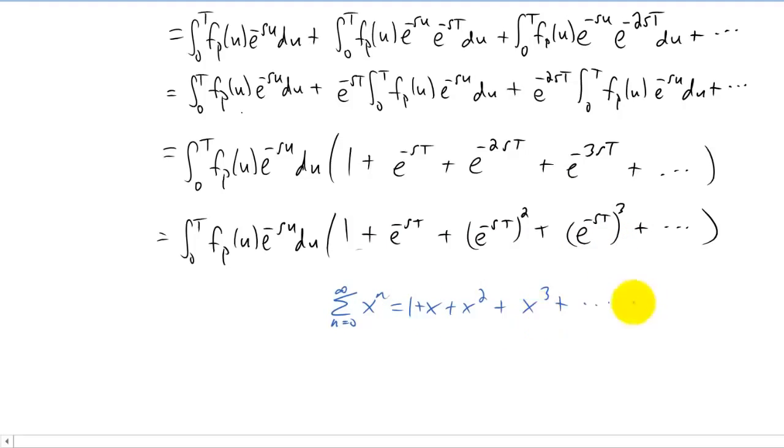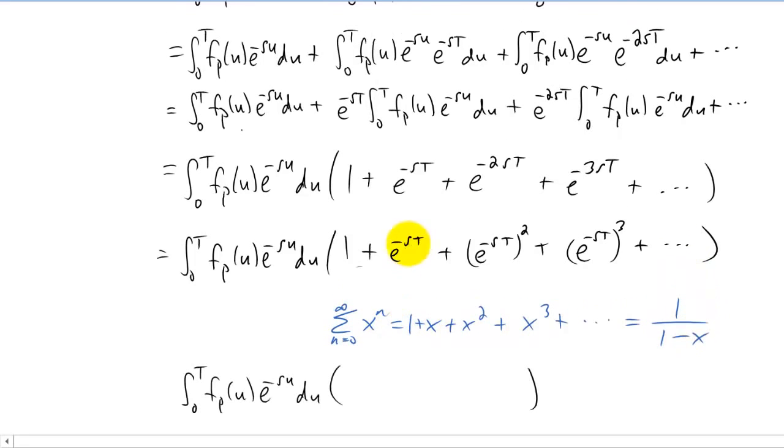And we know that whenever x is absolute value less than 1 that this series adds up to that right there. So what we're left with in the parentheses is just 1 over 1 minus e to the negative sT.